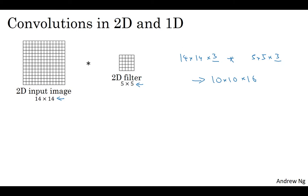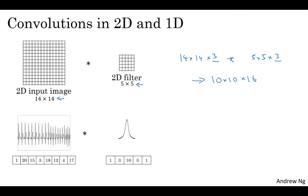It turns out that a similar idea can be applied to 1D data as well. For example, on the left is an EKG signal, also called an electrocardiogram. It's basically if you place an electrode over your chest, this measures the little voltages that vary across your chest as your heart beats, because the little electric waves generated by your heart beating can be measured with a pair of electrodes. This is an EKG of someone's heart beating, and each of these peaks corresponds to one heartbeat. If you want to use EKG signals to make medical diagnosis, then you would have 1D data. What EKG data is, is a time series showing the voltage at each instant in time. So rather than a 14 by 14 dimensional input, maybe you just have a 14 dimensional input. In that case, you might want to convolve this with a one dimensional filter, so rather than 5 by 5, you just have a 5 dimensional filter.